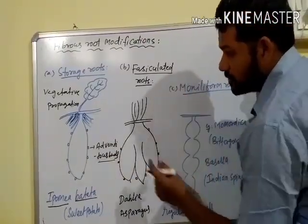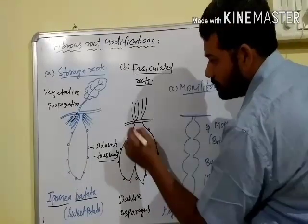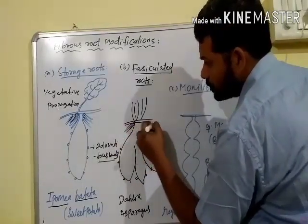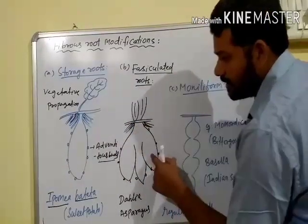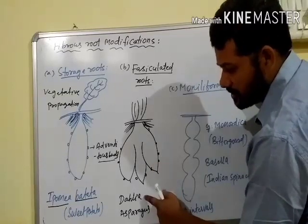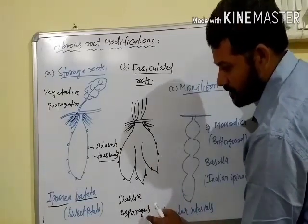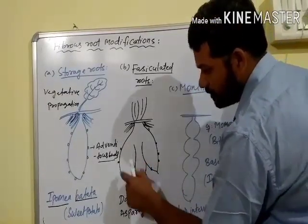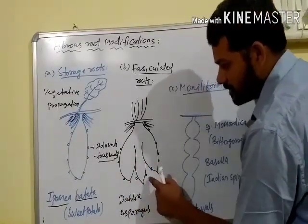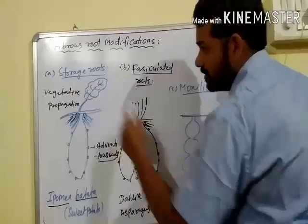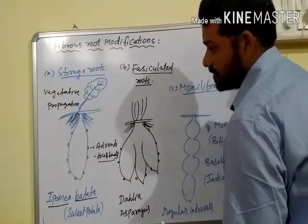The second Fibrous Root modification is Fasciculated Roots. In Fasciculated Roots, a bunch of roots store food material and become tuberous. Examples are Dahlia and Asparagus. These roots also contain adventitious buds that take part in vegetative propagation.